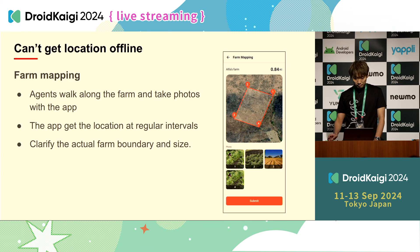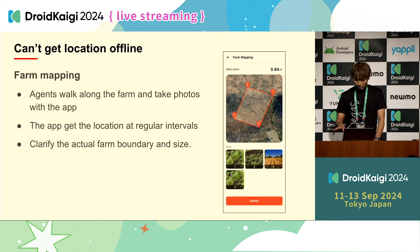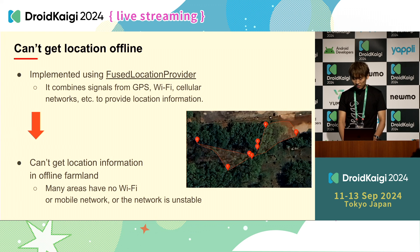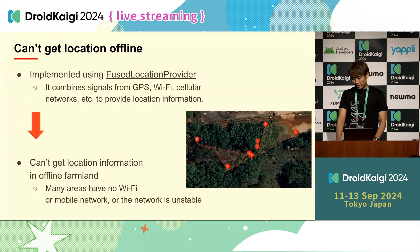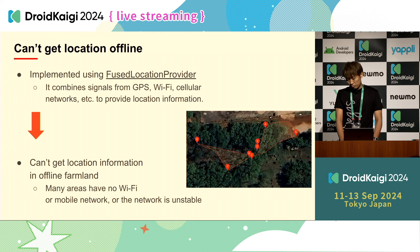Next challenge: getting location offline. There's a feature called farm mapping. This feature uses smartphone location to map farmland by walking around the boundary. We do this to clarify the actual farm boundary and size for each farmland. To get location on Android, it's recommended to use the Fused Location Provider API, and we implemented using it. However, when we tested this in farmland in Ghana, we encountered issues where the location was inaccurate or couldn't be retrieved at all.